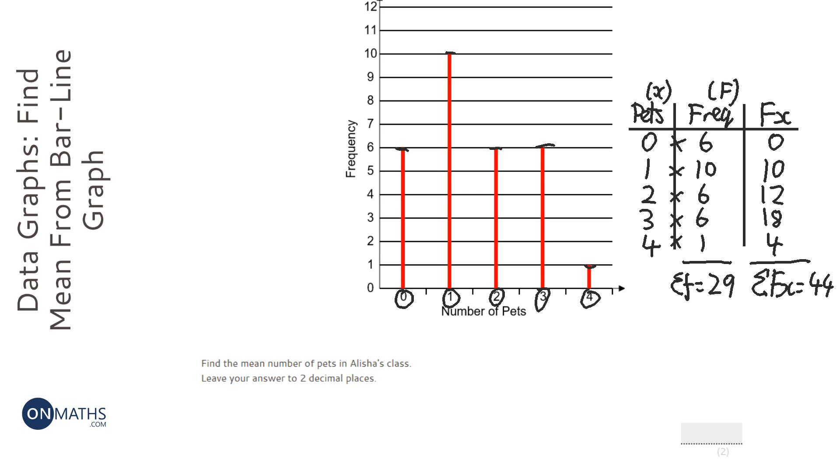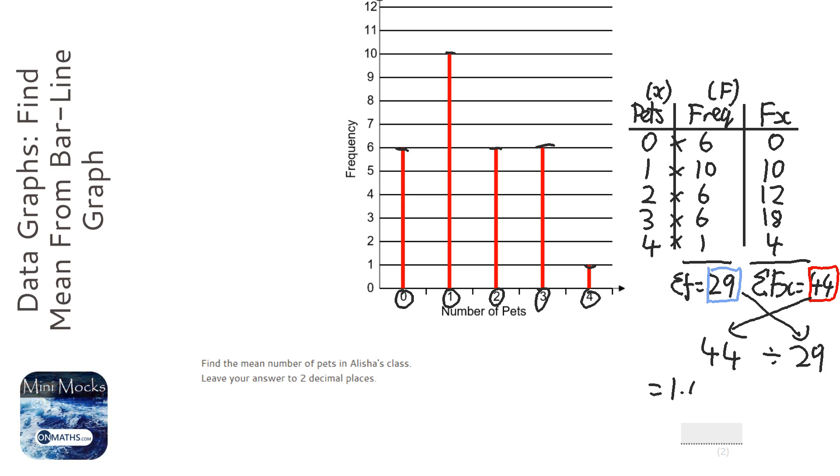Now, the mean is all of the stuff added together over how many there are. So, it's 44 over, which means divide, 29. So, 44 divided by 29. And it comes up with a fraction in the calculator, so just press S to D. And that equals 1.5172 and so on. It asks for two decimal places.